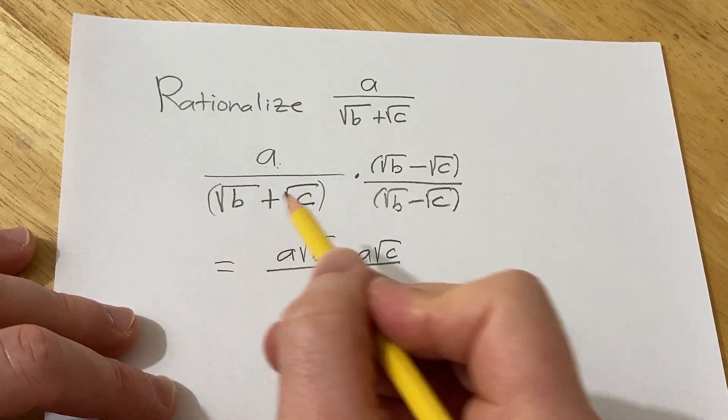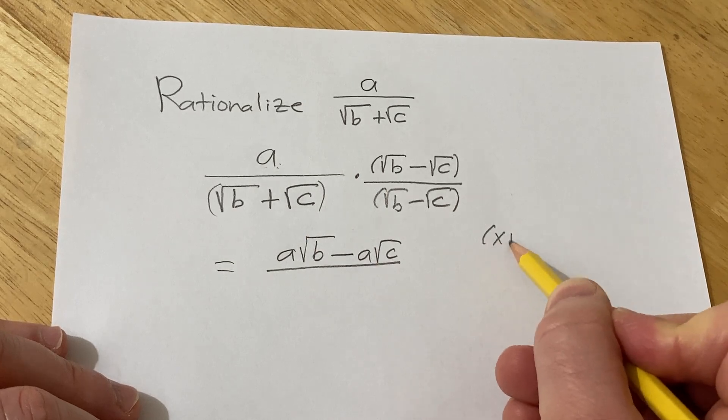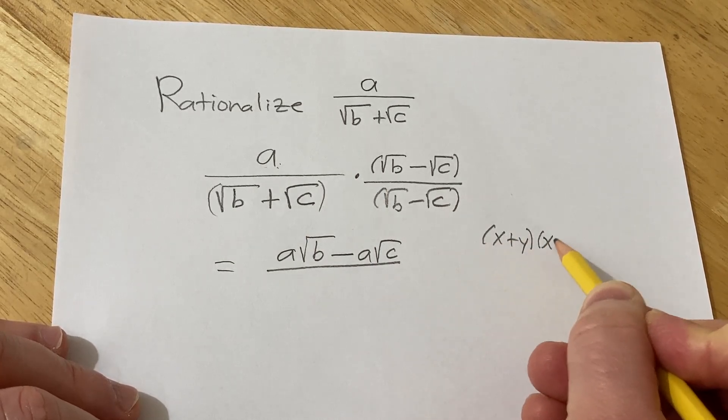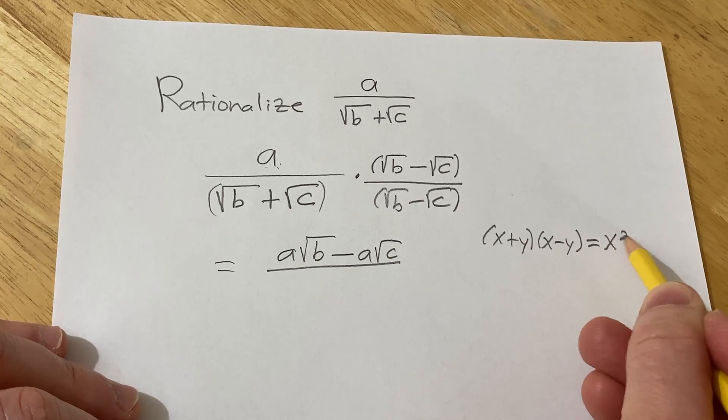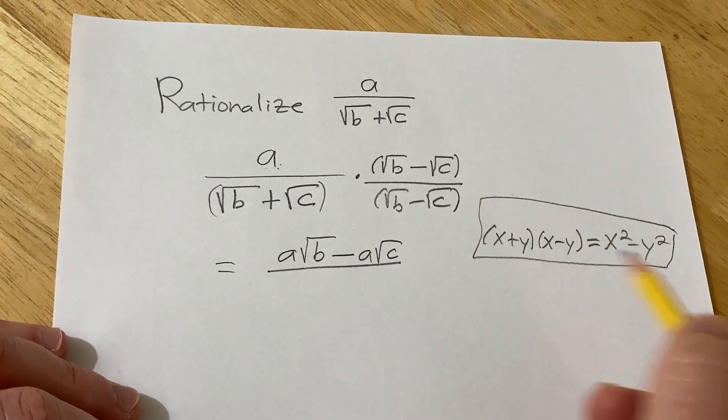In the denominator, we actually have the difference of squares formula. Recall if you have x plus y times x minus y, that's equal to x squared minus y squared. This formula is super powerful and it's called the difference of squares formula.